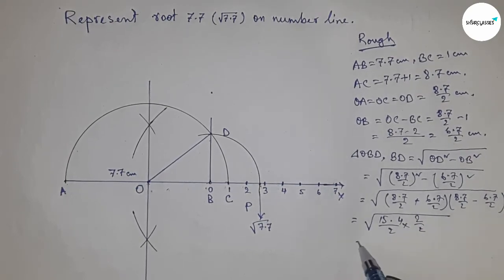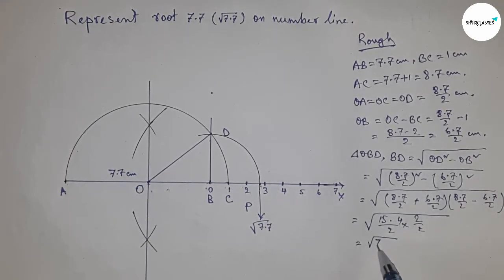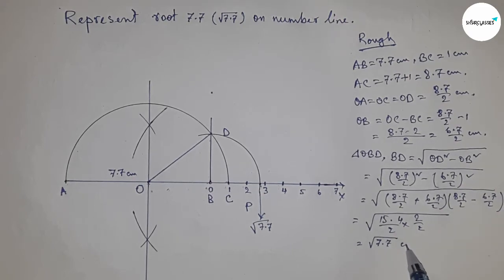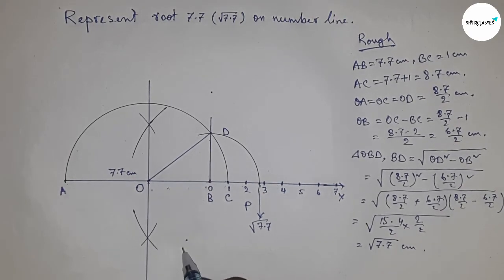This simplifies to 15.4/2 × 2/2 = √7.7 cm. Therefore, the distances BD and BP are equal to √7.7 centimeters.